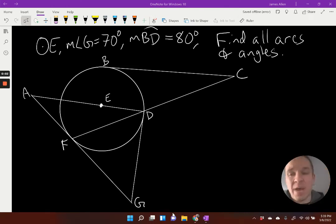It is about to get crazy up in here. I have circle E. The measure of angle G is 70 degrees and the measure of arc BD is 80 degrees. That's it. And I have to find every arc and angle in this diagram. OMG. This is going to be lit, capital L-I-T. It's going to be straight fire. Let's get to it because I'm just so excited.